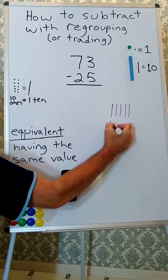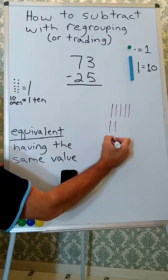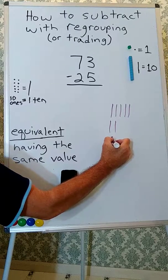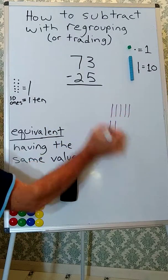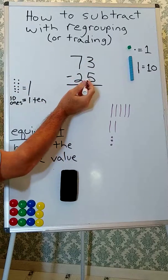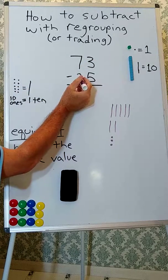1, 2, 3. So we're starting with 73, and this tells us we're subtracting 25.